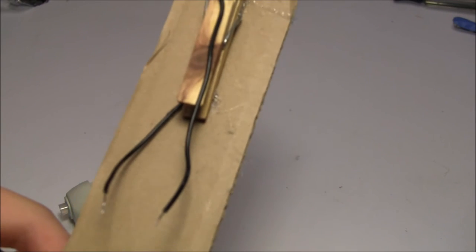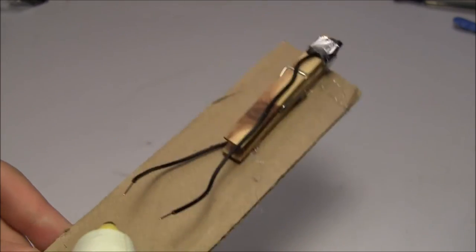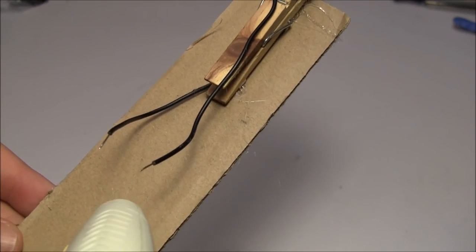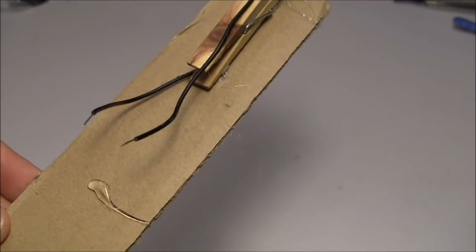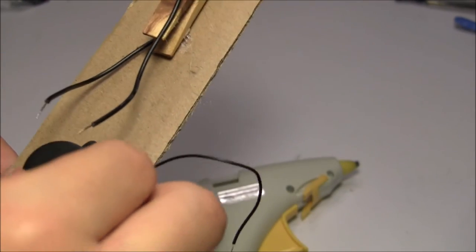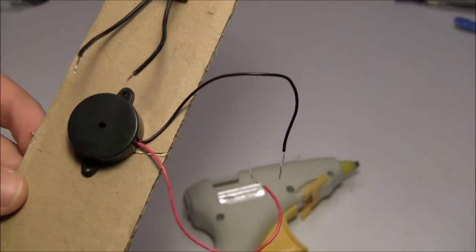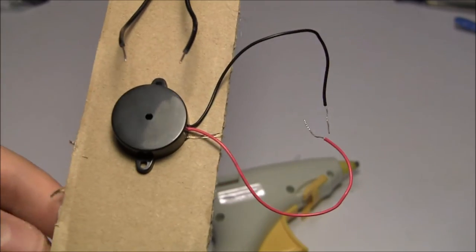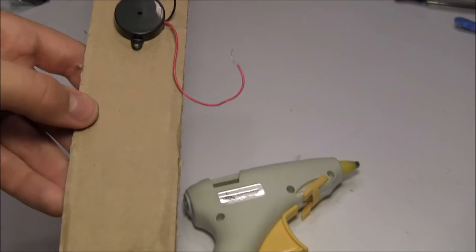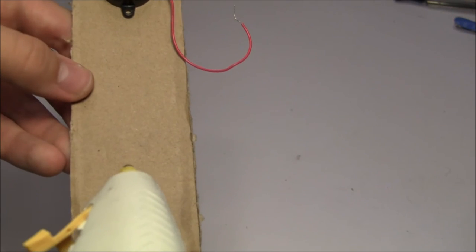Now, hot glue the buzzer to the middle of the cardboard. On the other side of the clothespin, hot glue the 9-volt battery to the cardboard.